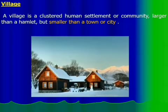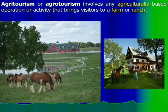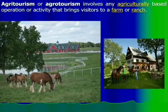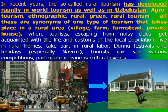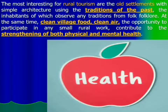A village is a settlement or community larger than a hamlet but smaller than a big city or town. Agritourism involves any agriculture-based operation or activity that brings visitors to a farm or ranch. In recent years it has developed rapidly in world tourism as well as in Uzbekistan. Agrotourism, ethnographic tourism, rural tourism, and green tourism are all synonymous terms.